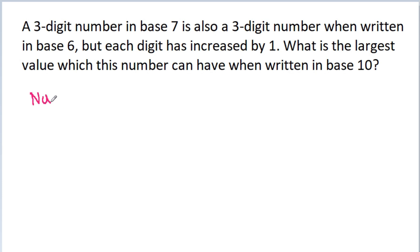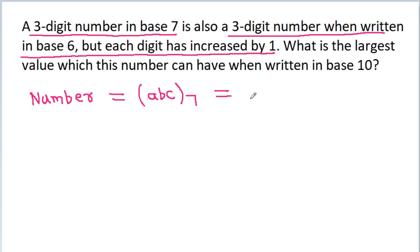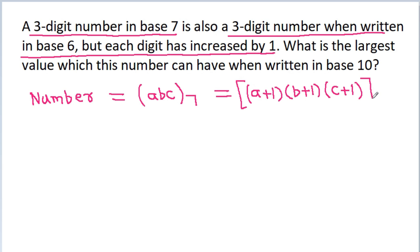The number is a 3-digit number in base 7. Suppose it is ABC in base 7, and it is also equal to a 3-digit number when written in base 6, but each digit has increased by 1. So it will be (A-1)(B-1)(C-1) in base 6.